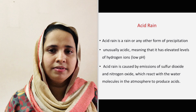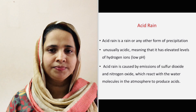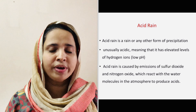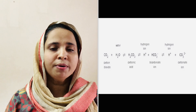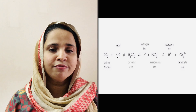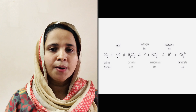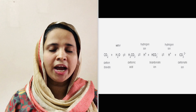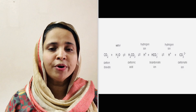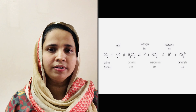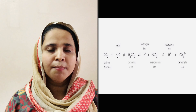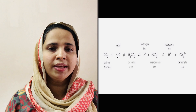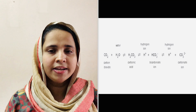We have known that the normal rainwater pH is 5.6 due to the presence of H⁺ ions formed by the reaction between rainwater and carbon dioxide present in the atmosphere. Water reacts with carbon dioxide to form carbonic acid, and then carbonic acid decomposes to give H⁺ and bicarbonate ions.